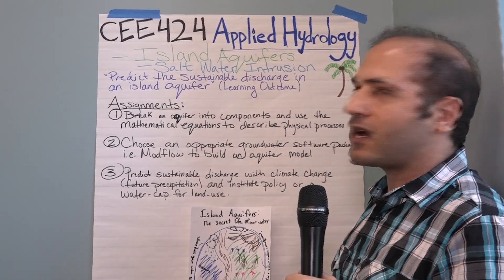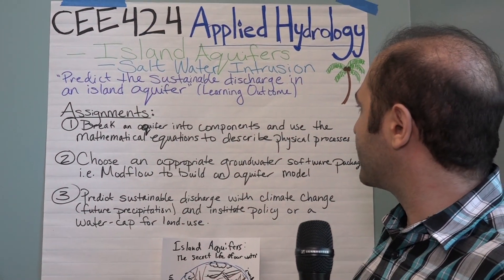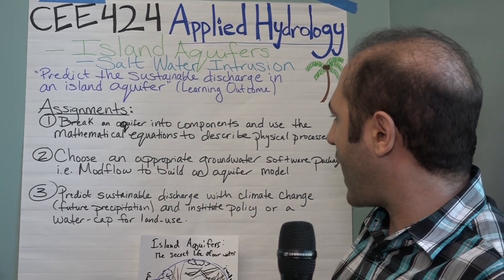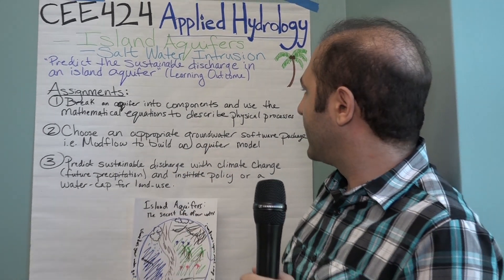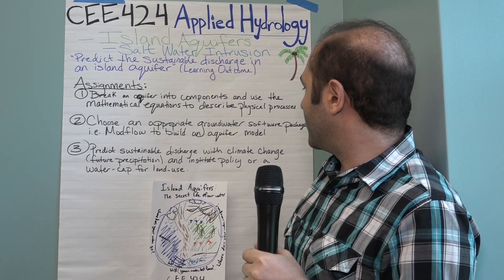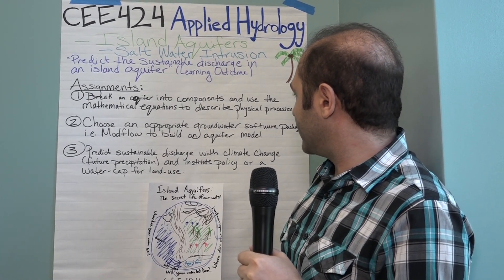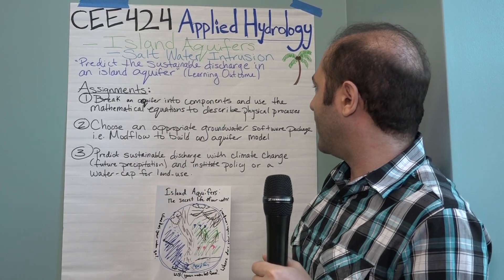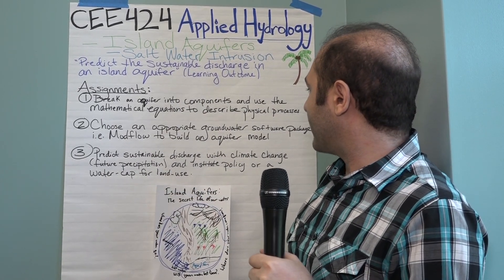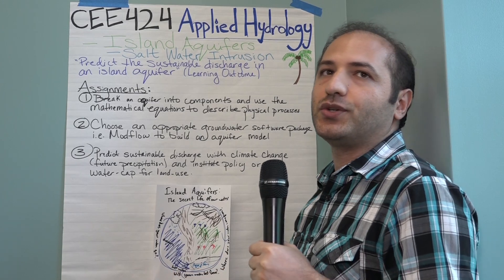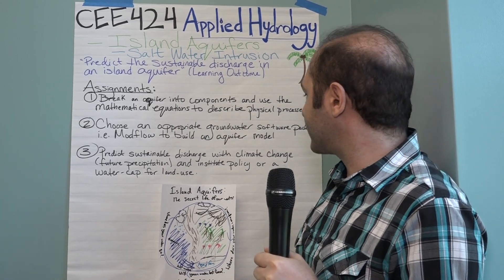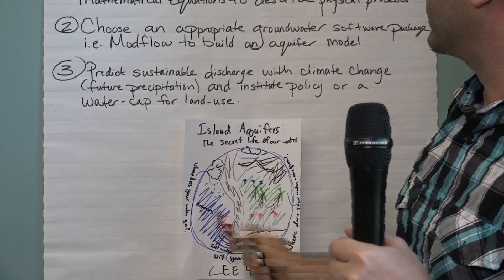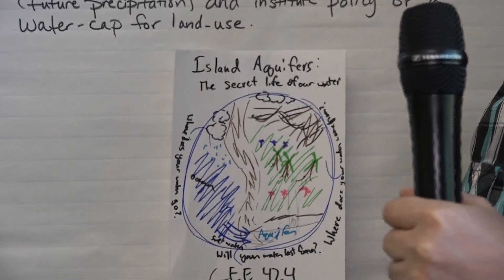The assignment is to introduce the students to the mathematical equations behind aquifers and how the physics of the aquifer work. The next step is to introduce the MODFLOW software to the students so that they know how to run it. Finally, they will apply it to a case study or a real aquifer on the island of Oahu to come up with the sustainable discharge for that aquifer.